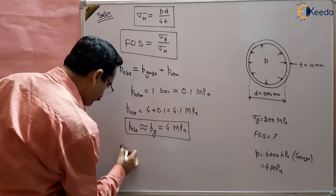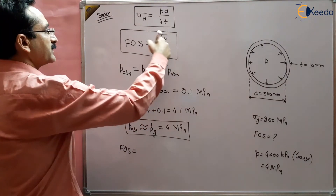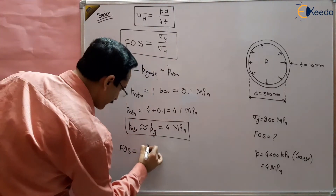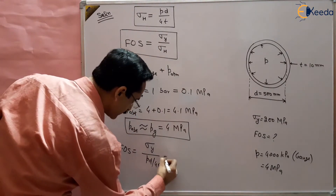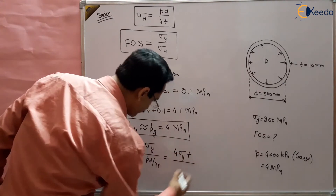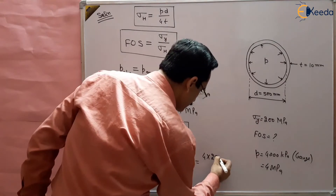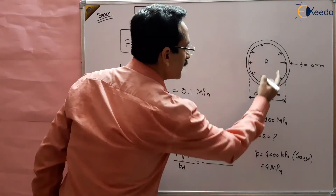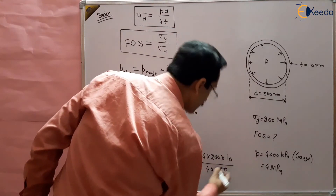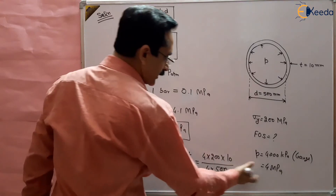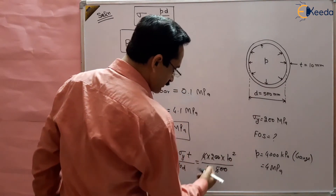The factor of safety equals yield stress divided by hoop stress, which is σy divided by (pd/4t). This simplifies to 4σy·t divided by p·d. Substituting values: 4 × 200 × 10 divided by 4 × 500. The 4 cancels, giving 200 × 10 / 500 = 4. So the factor of safety is 4.